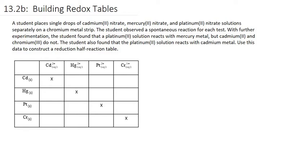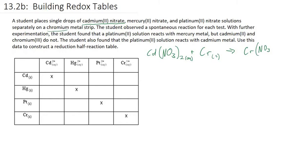Let's parse through our data. We have drops of cadmium-2 nitrate reacting spontaneously with chromium metal. That is just cadmium nitrate — it's an ionic bond, cadmium-2, so we need two nitrates — reacting spontaneously with chromium solid. This is a single replacement reaction, so we're turning this into chromium nitrate, and chromium prefers a 3+ charge.